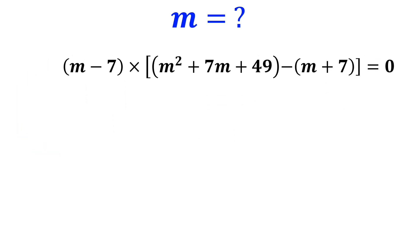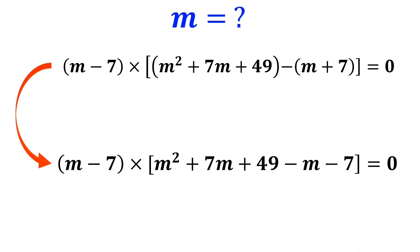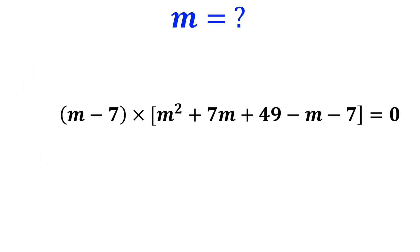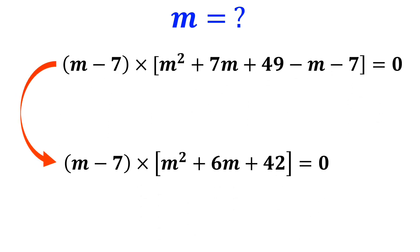Now, we simplify the expression inside the brackets, and it becomes m minus 7 times m squared plus 7m plus 49 minus m minus 7 equals zero. This equation simplifies to m minus 7 times m squared plus 6m plus 42, which is equal to zero.